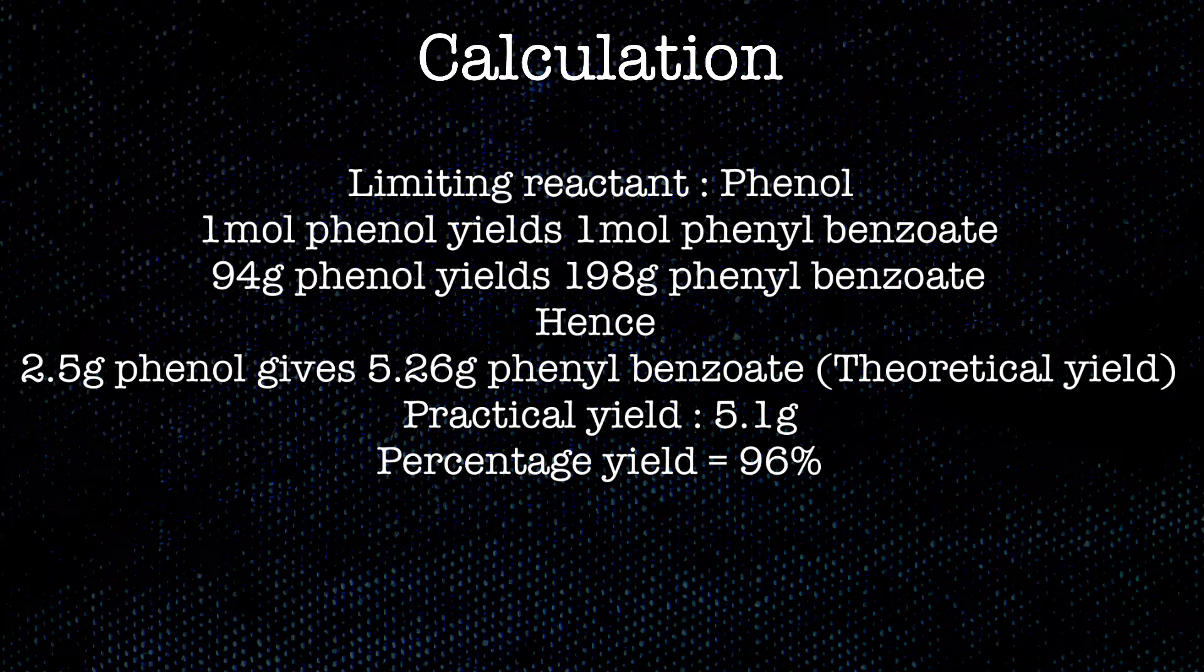Here we have taken 2.5 grams of phenol, and that should theoretically yield 5.26 grams. So the theoretical yield is 5.26 grams and the practical yield was 5.1 grams, giving a percentage yield of 96%.